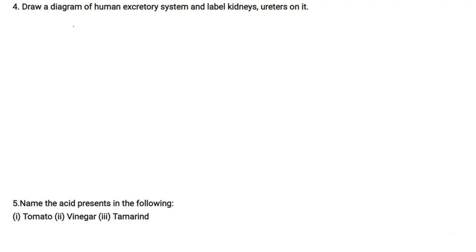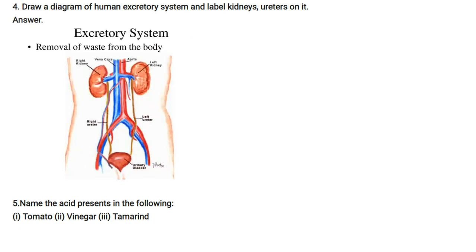Diagram of the human excretory system — label kidneys and ureters. This is how removal of waste, especially urine, takes place. This is the right kidney, left kidney, left ureter, and right ureter that goes to the urinary bladder from where the urine comes out.